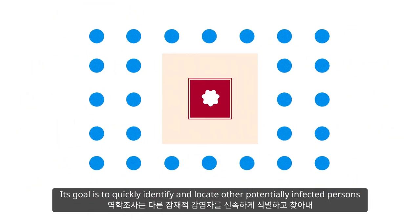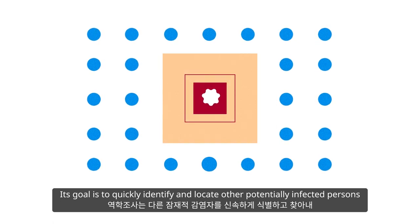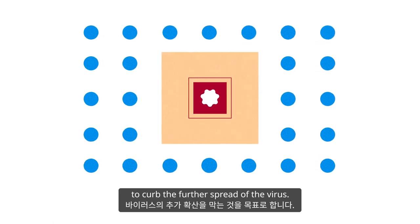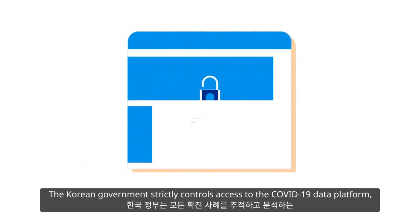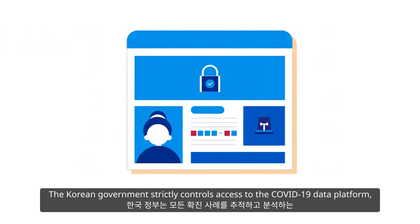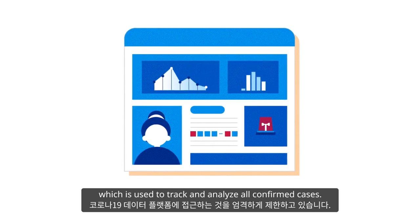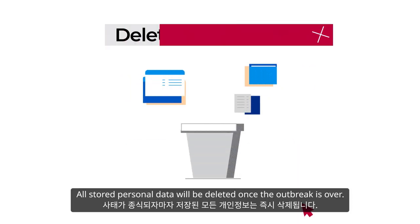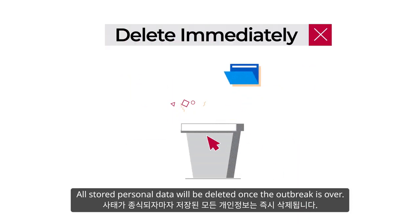Its goal is to quickly identify and locate other potentially infected persons to curb the further spread of the virus. The Korean government strictly controls access to the COVID-19 data platform, which is used to track and analyze all confirmed cases. All stored personal data will be deleted once the outbreak is over.